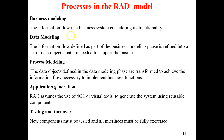These are the processes of the RAD model. First is business modeling — you gather the business requirements and identify what functionality is needed. Data modeling: the information flow identified is converted into data objects. Process modeling: the data objects from data modeling are transformed into processes — the functions you are going to implement. Application generation: RAD uses 4GL or visual tools to generate the system using reusable components. Testing and turnover: new components need to be tested and delivered to the customers.